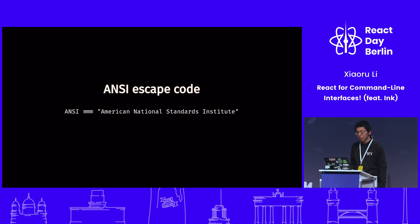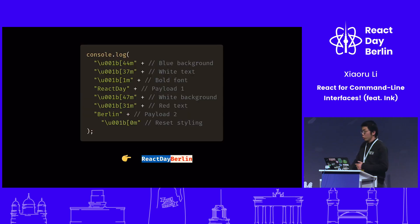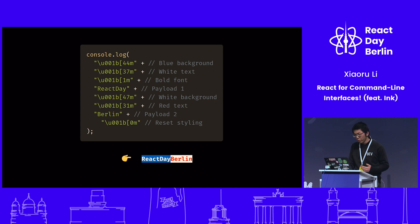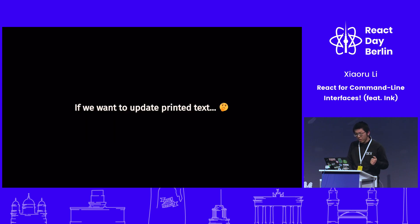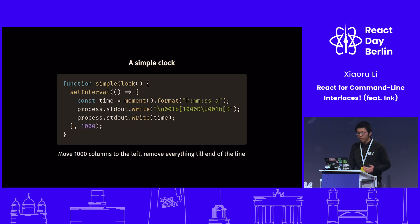That's because we use something called ANSI escape codes, and those are super ugly if you directly use them. For example, if you want to print color text, we need to write a whole page of non-readable, non-printable stuff. And if we want to update an already printed line, we need to move our cursor to 1000 columns to the left and remove everything like that. So this is not very helpful.